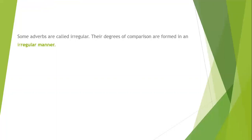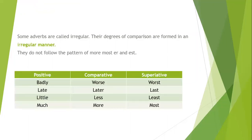There are some adverbs that are irregular. That means their superlative and comparative degrees are totally outside these rules — they cannot be formed by adding '-er'/'-est' or 'more'/'most'. Their degrees of comparison are formed in an irregular manner with entirely different words. For example, 'badly' ends in '-ly' but its comparative degree is 'worse' and superlative degree is 'worst'.